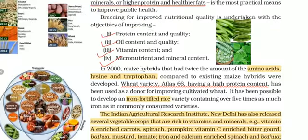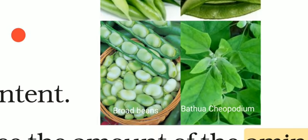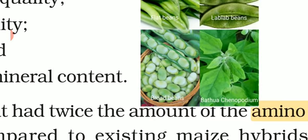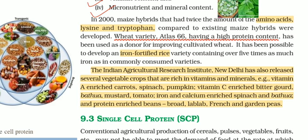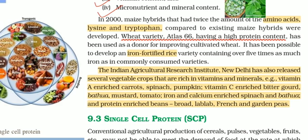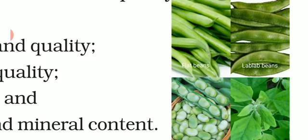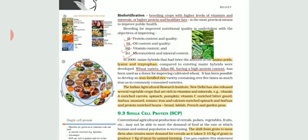Bathua — mostly used in saag preparation. Chenopodium is the scientific name of bathua. In bathua also, they have enriched vitamin C. Then mustard, then tomato. Biofortified spinach and bathua, rich in iron and calcium, have been made. Last, most of the beans — broad beans, flat beans, lub-lub beans, and garden peas — all have been made protein rich.